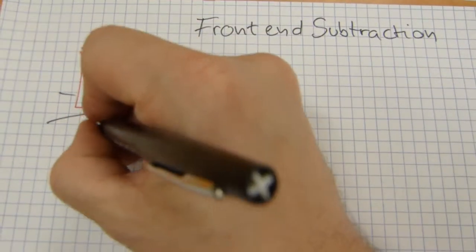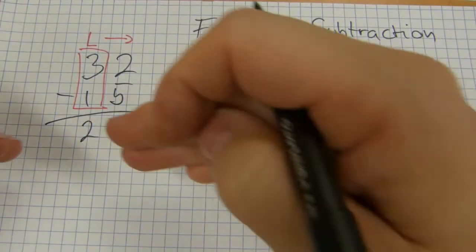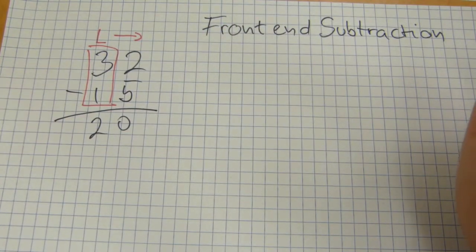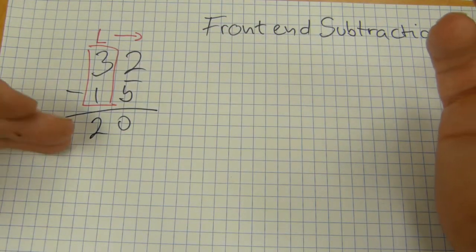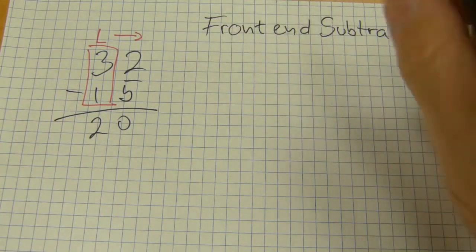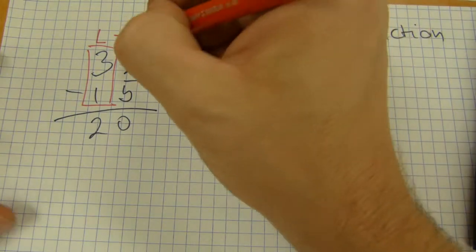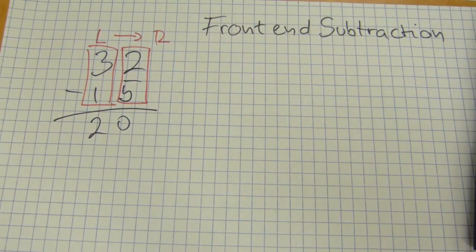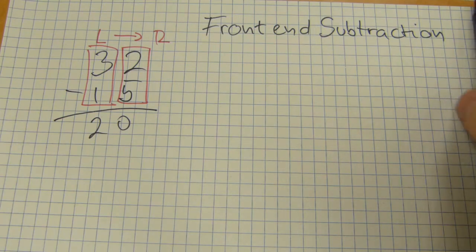30 minus 10 is 20, so you put down 20. Now, 20 is not the final answer. 20 is a subtotal, 20 is one of the differences. We're gonna have some numbers here, I'll show you. Next one is we're going towards the right, so next one is the ones column.